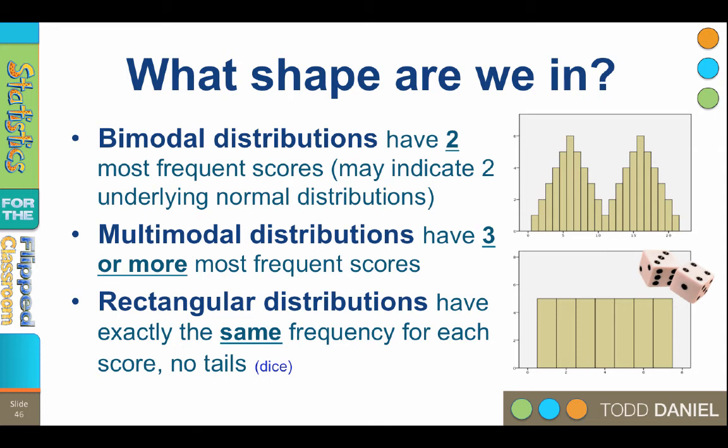Once you add a second die, however, your distribution will begin to look more normal. Rectangular distributions have exactly the same frequency for all scores and do not have tails.